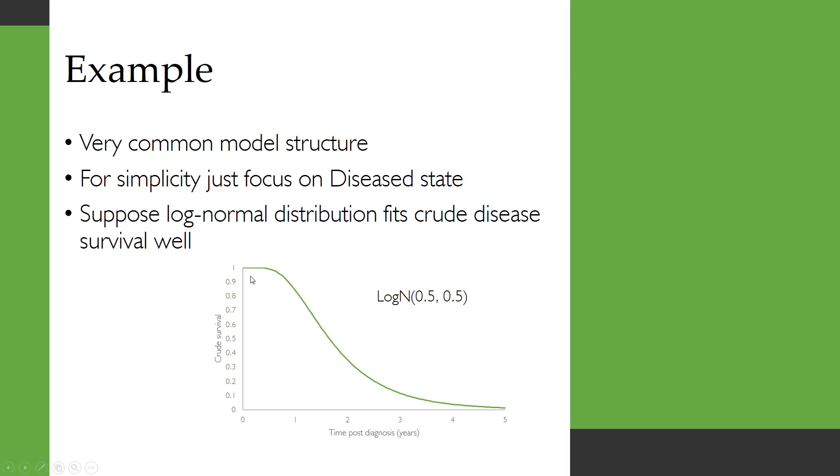And let's imagine that the log normal distribution fits crude disease survival well. And so here's a picture of the survival in that diseased state. So most people survive for a year but then there's a quick drop off in survival and very few people survive to four or five years.